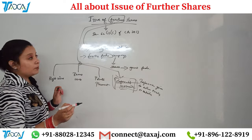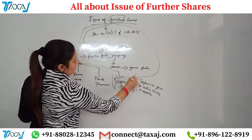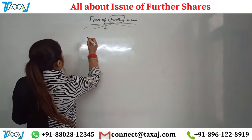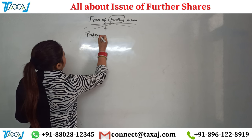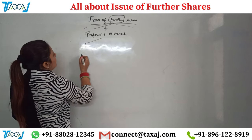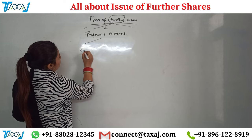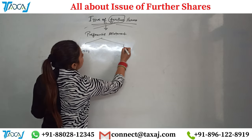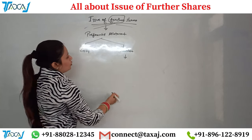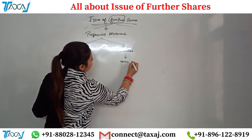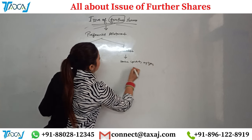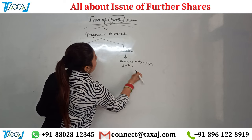Today in this topic we will cover issue of further shares through preferential allotment. In preferential allotment, we issue shares either to our existing shareholders and raise funds from them, or we can also bring in outsiders — outsiders can include venture capitalists, company employees, creditors, debtors, or any other unknown party.